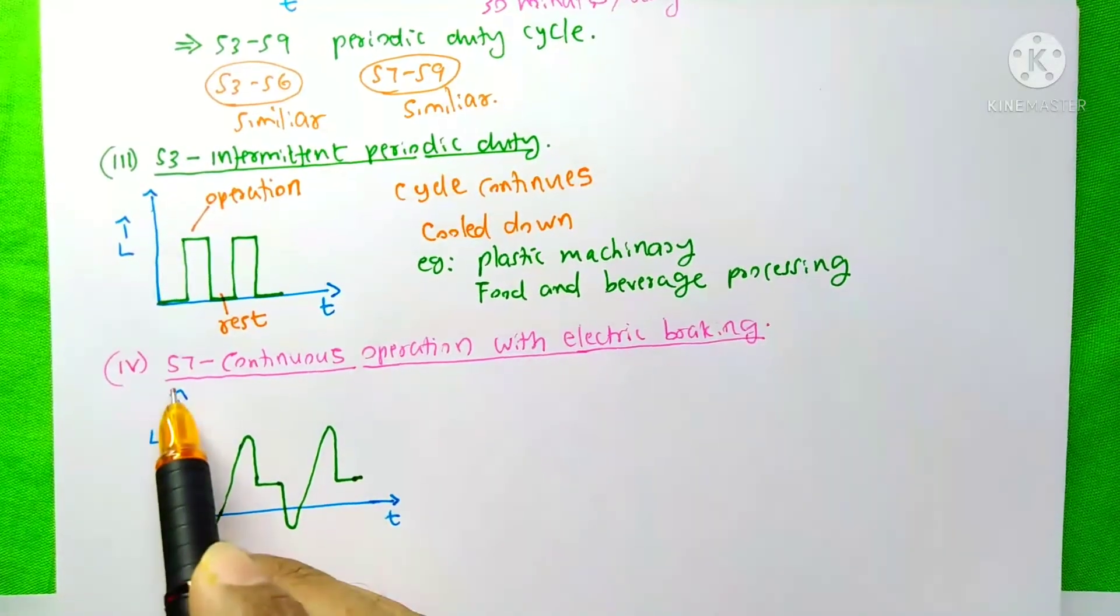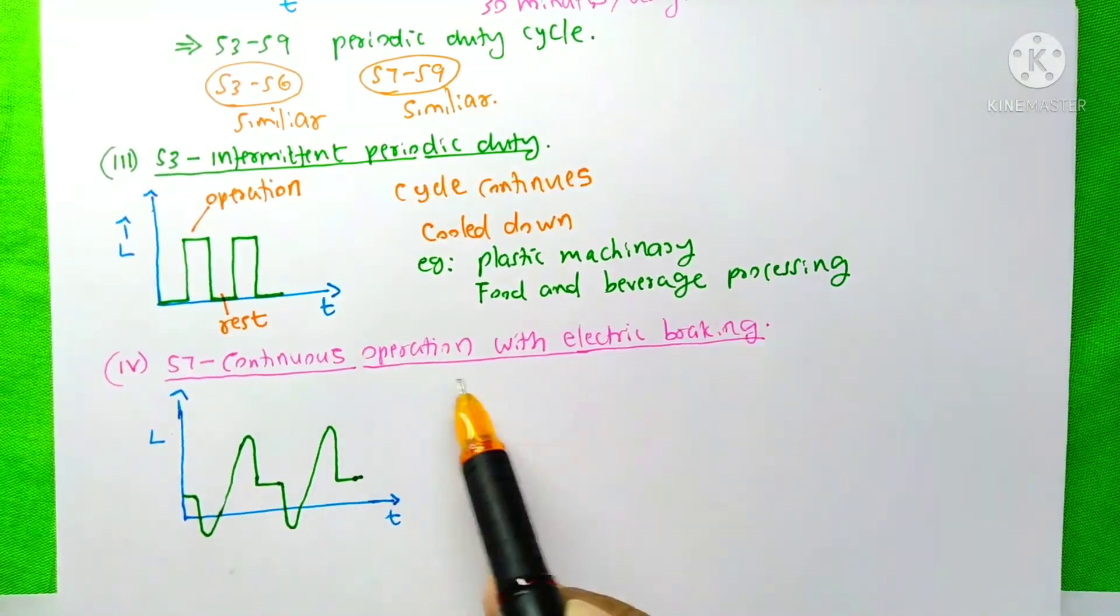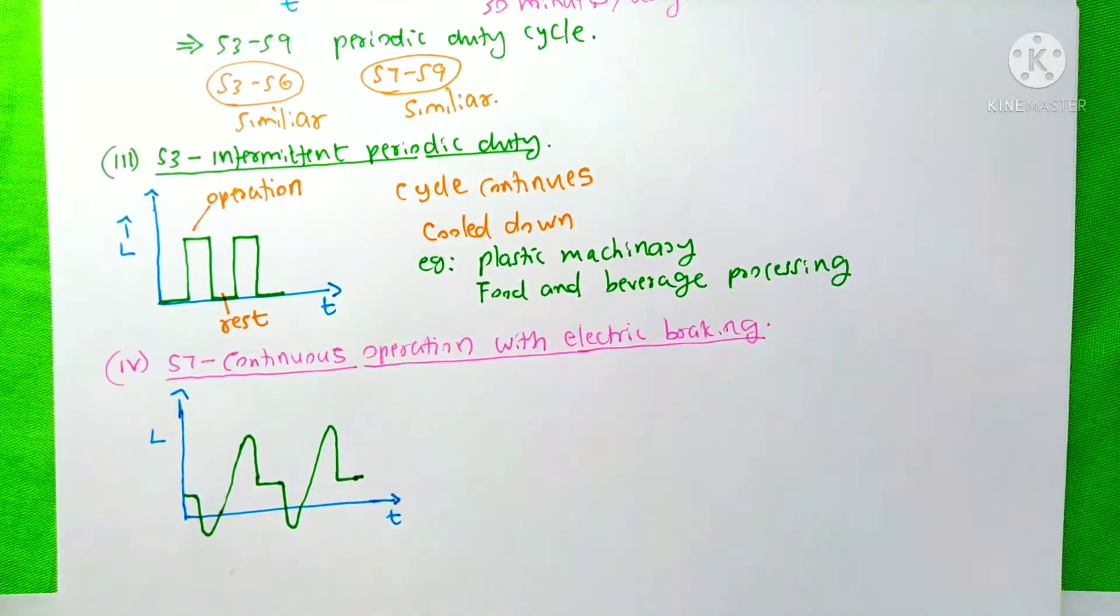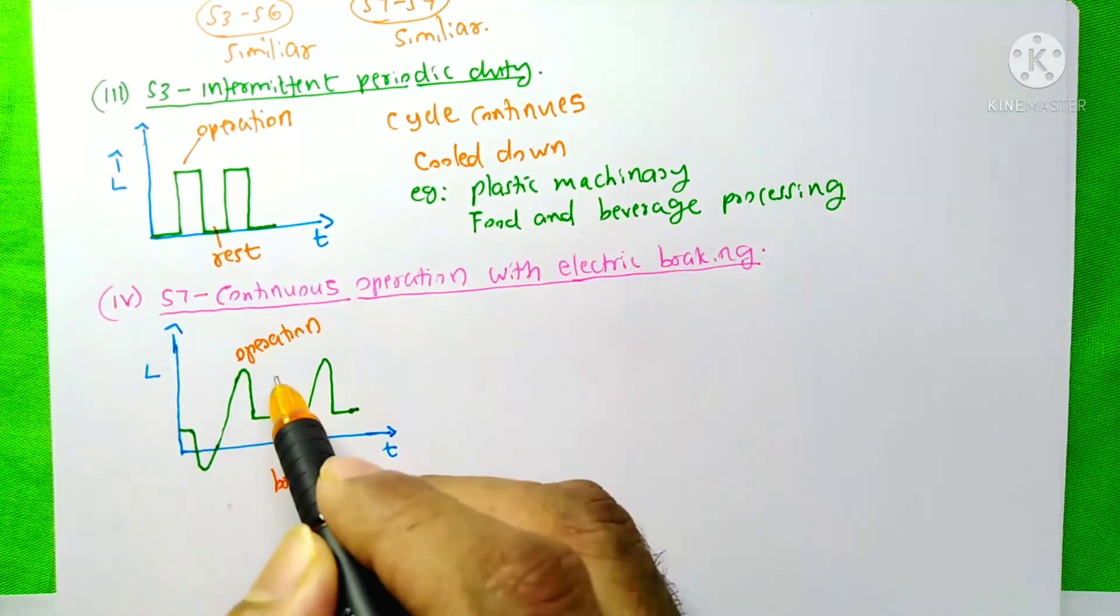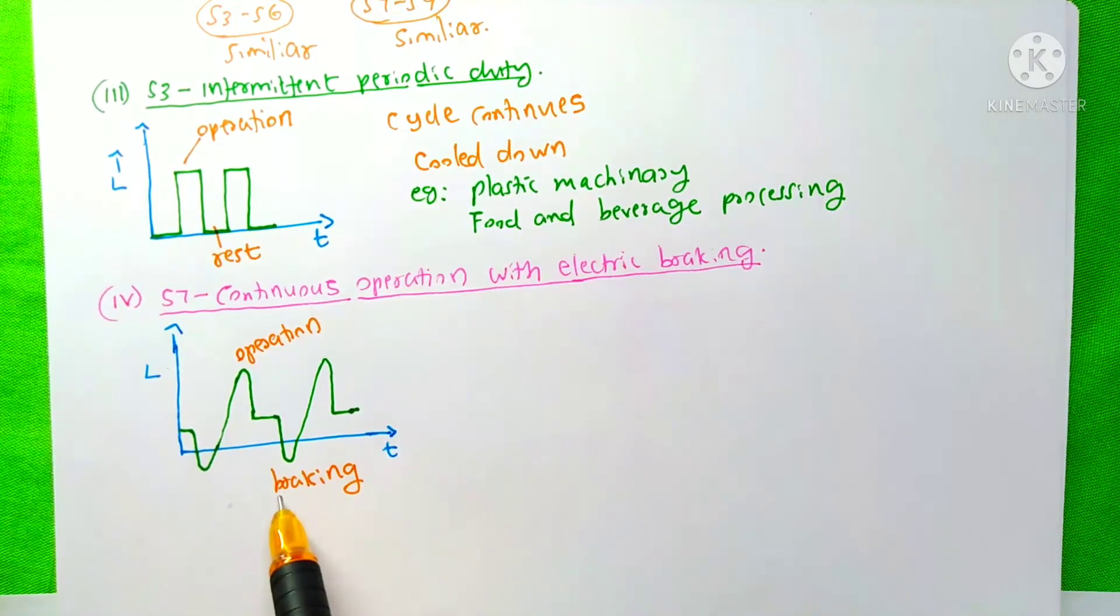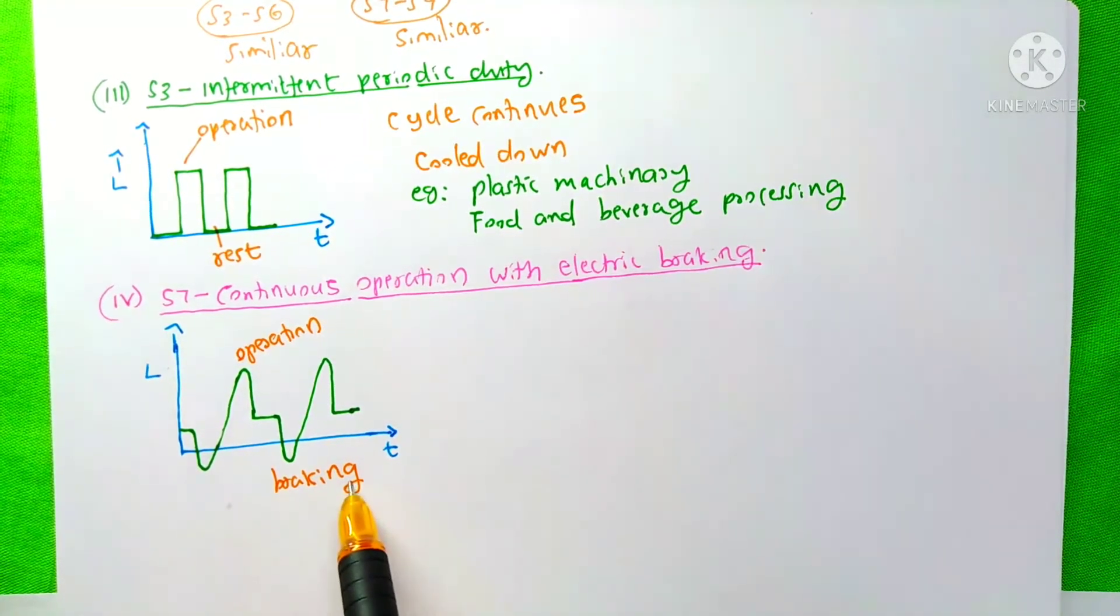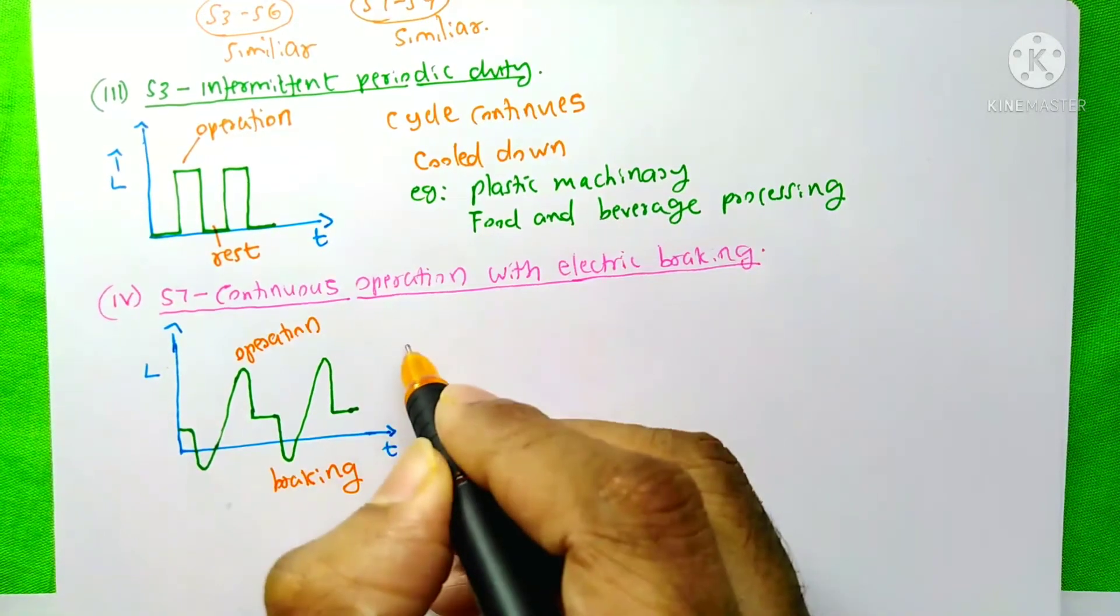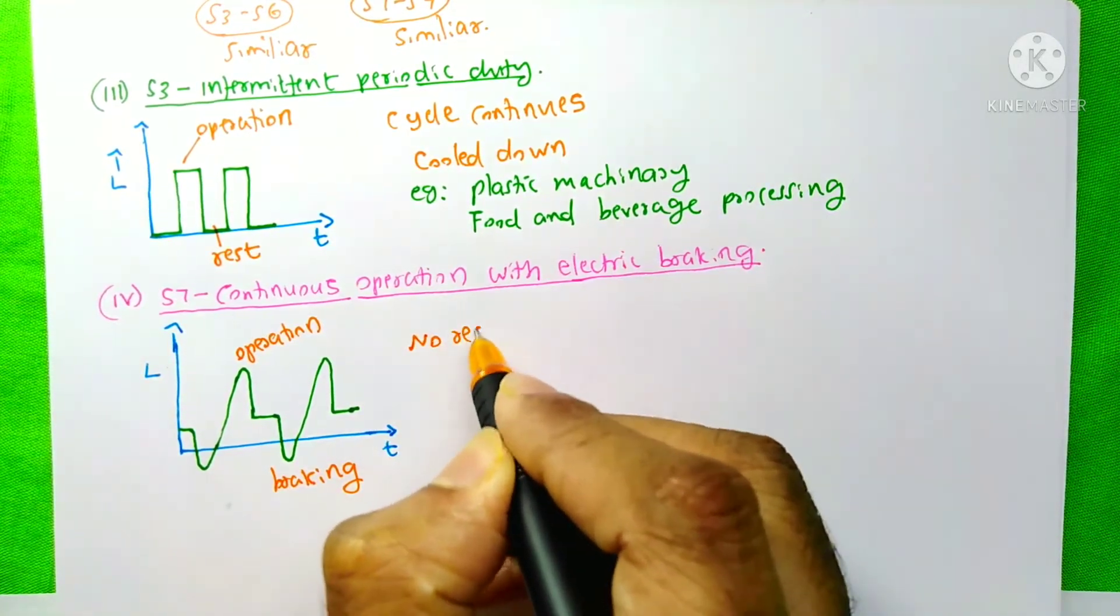And the next cycle is S7, Continuous Operation with Electric Braking. This portion of the graph indicates the operation of the motor and this portion indicates the electric braking. Here you can see, there is no rest time for the motors.